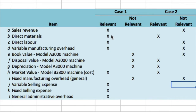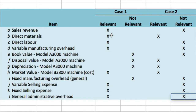If production is not going to change, fixed manufacturing overhead is irrelevant — we'll incur that cost under both scenarios. Variable selling expense: we're told nothing changes other than material savings, so production and sales volume are not going to change, meaning anything variable won't change. Fixed selling expense is irrelevant — the same under both scenarios. General administrative overhead will be the same under both scenarios. To recap: identify sunk costs and ignore them; identify costs the same under both scenarios and ignore them. Everything else is, by default, relevant.